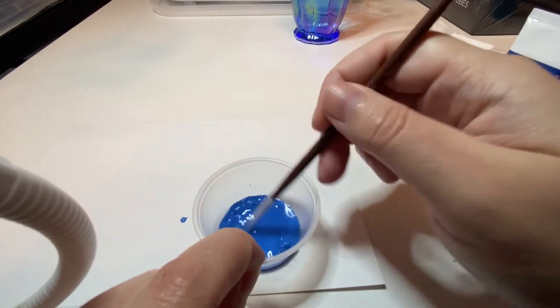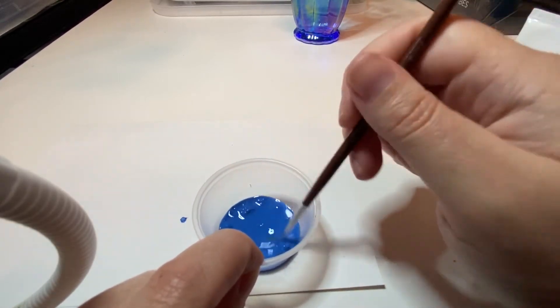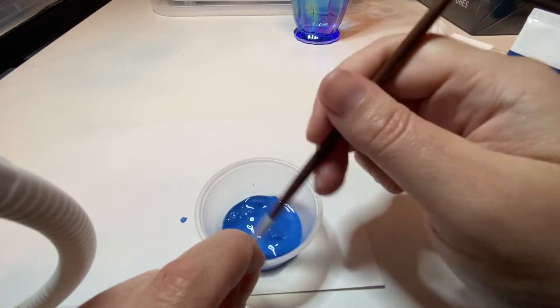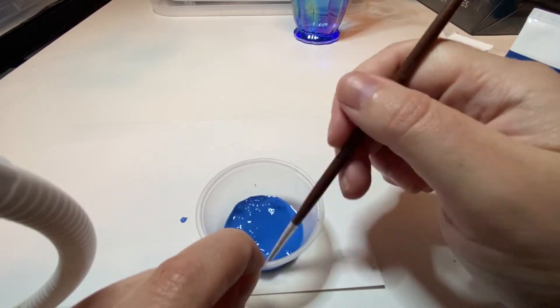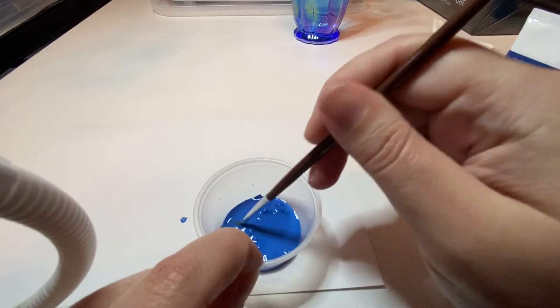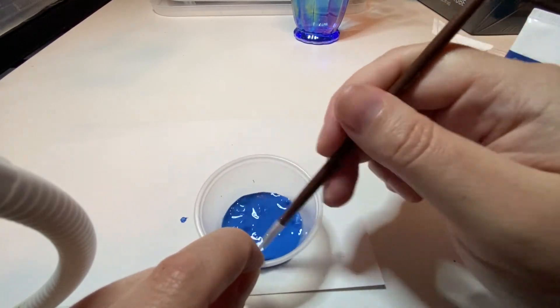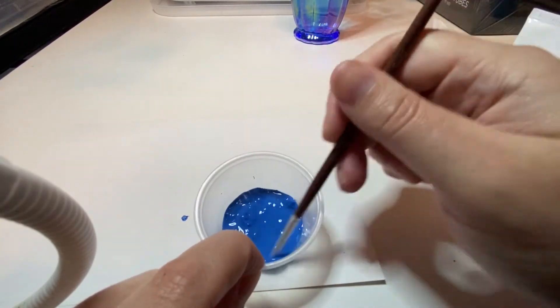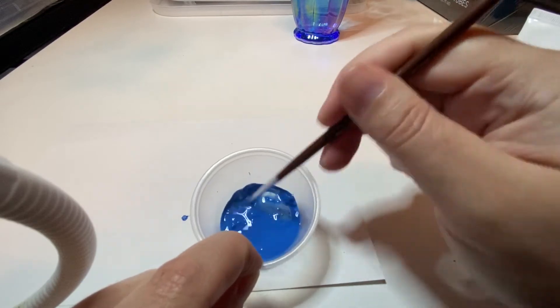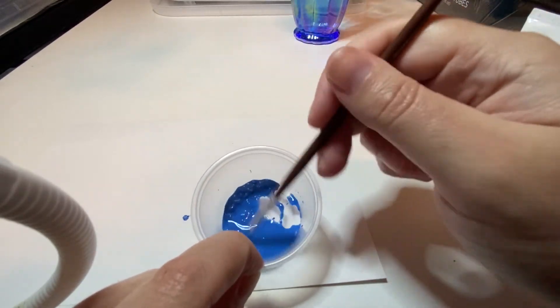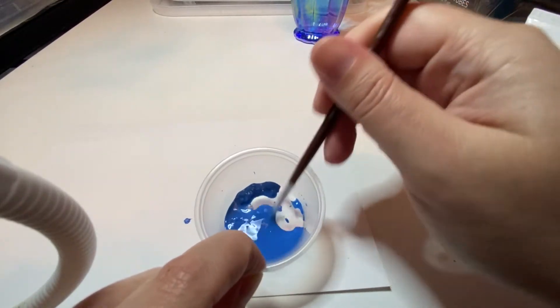If you have just like Liquitex or Apple Barrel or those craft paints that come in little tubes like folk art, then what you want to do is not water it down because it's probably already at the consistency that it needs to be. So it needs to be at the consistency of that watery craft paint.